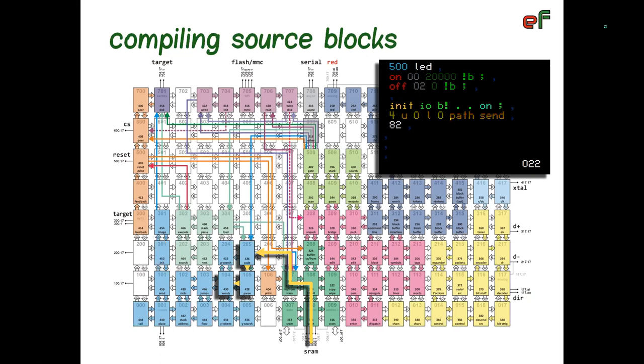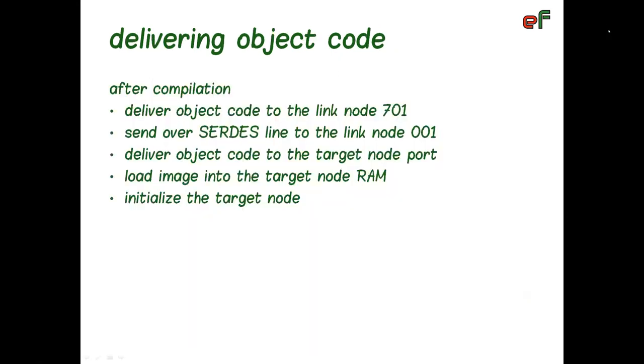The last word in the source code is always yellow word send, which expects a path to the target node and asks node 101 to build an ether message with the object code and send it over service line to the target node. Delivering object code is not a trivial task. After compiling an image and initialization code, we must move that code to the link node 701, then send it over service line to the link node 001 in the target chip, then deliver that code to the target node port, load the image into target node RAM, and finally execute the initialization code.